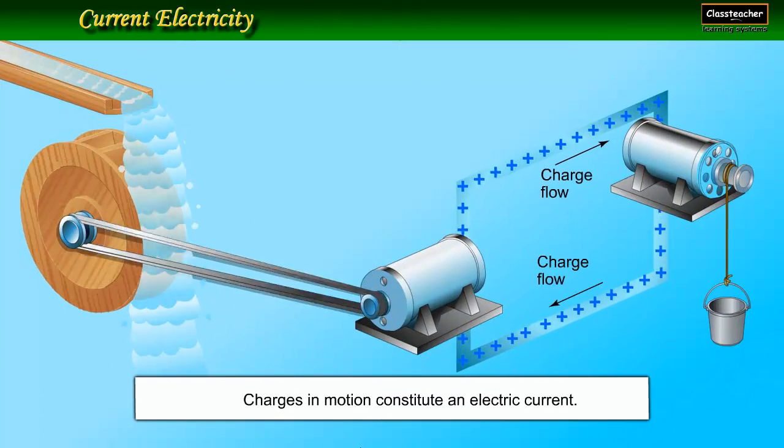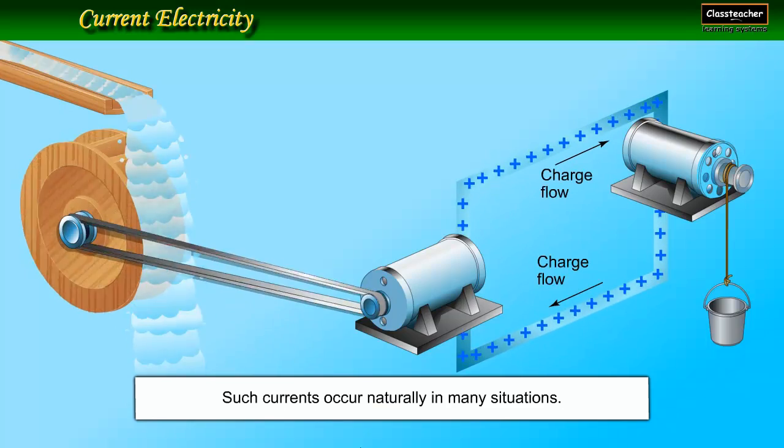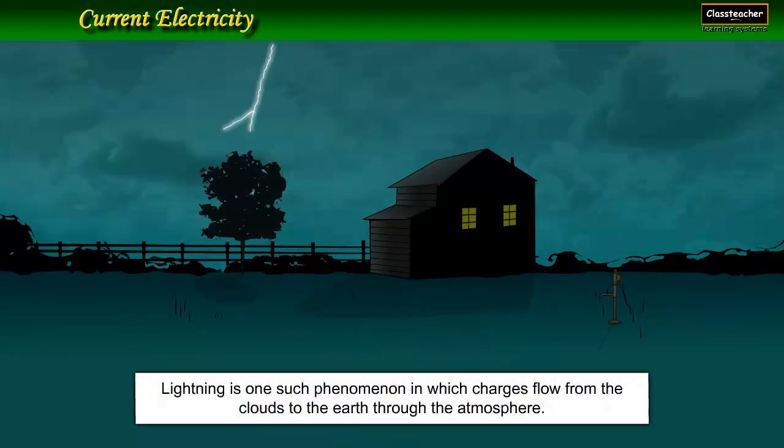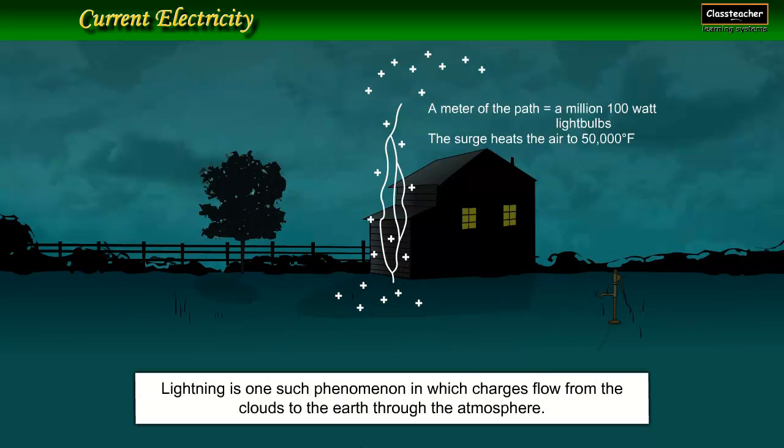Charges in motion constitute an electric current. Such currents occur naturally in many situations. Lightning is one such phenomenon in which charges flow from the clouds to the earth through the atmosphere.